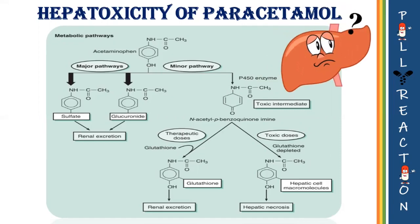To understand this, we will first look at the normal metabolic process of paracetamol. Paracetamol is metabolized in the liver. The majority undergoes glucuronidation and sulfation — which are phase 2 reactions — and is converted into non-toxic metabolites that undergo renal excretion. However, a small amount of paracetamol is metabolized by the cytochrome P450 enzyme, producing a potentially hepatotoxic quinone intermediate called N-acetyl-p-benzoquinoneimine (NAPQI). This NAPQI is rapidly inactivated by conjugation with glutathione.